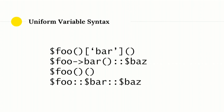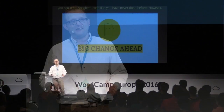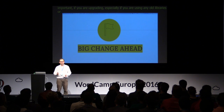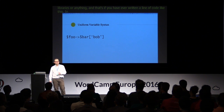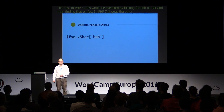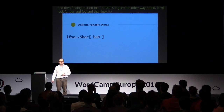The Uniform Variable Syntax — I can't go through all the changes today because it's only 10 minutes, but this is a really important one. It just makes everything more consistent. It's related to the Abstract Syntax Tree and means you can now return callables on results of static methods and everything in ways you couldn't do in PHP 5. However, there is one big implication: in PHP 5, a line like foo bar Bob would be executed by looking for Bob on bar and then finding that on foo. In PHP 7, this goes the other way around — it will look for bar on foo and then look for Bob on the result. This is one of the easiest sources of bugs in PHP 7.